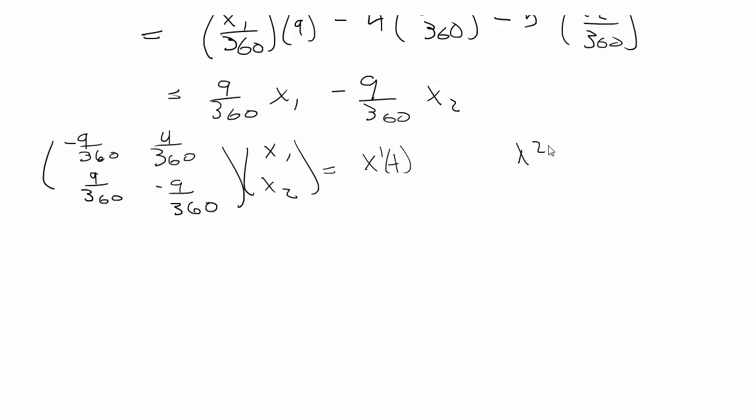So we're going to write out the characteristic equation again, so that's lambda squared minus t lambda plus d equals 0. t is going to be negative 18 over 360, so that simplifies as negative 1 over 20. d is going to be this diagonal multiplied minus this diagonal. And that's going to be 1 over 2880.